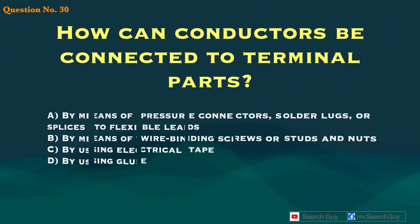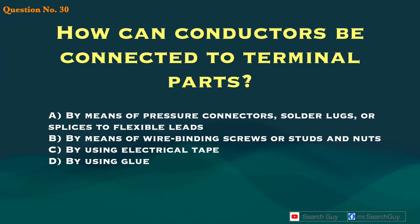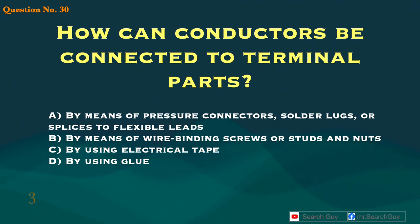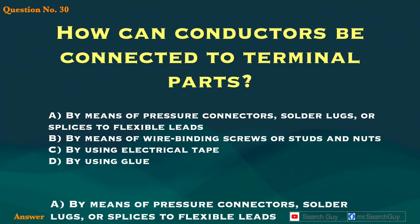Question 30. How can conductors be connected to terminal parts? A. By means of pressure connectors, solder lugs, or splices to flexible leads. B. By means of wire binding screws or studs and nuts. C. By using electrical tape. D. By using glue. Answer: A. By means of pressure connectors, solder lugs, or splices to flexible leads.